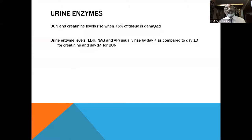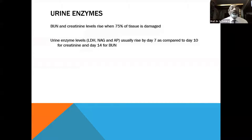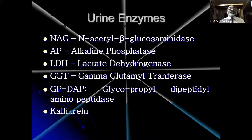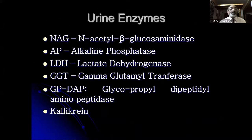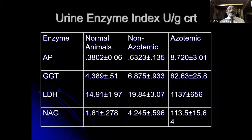Treatment of AKI: limit further renal damage and enhance cellular recovery. Treatment is most successful during the induction and extension phases and diminishes once the latter phases have been reached. The most effective therapy of AKI is careful management of fluid balance. Do not think of a drug first — it is pre-renal, so treat the pre-renal cause. Fluid therapy is the priority.